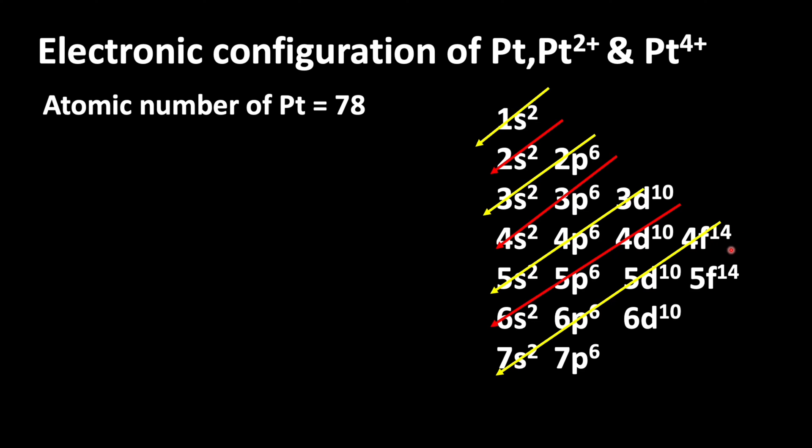Using this, let us write the electronic configuration of platinum: 1s², 2s², 2p⁶, 3s², 3p⁶, 4s². After 4s², electrons enter into 3d orbital: 3d¹⁰, 4p⁶, 5s².